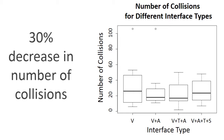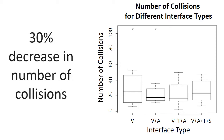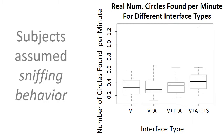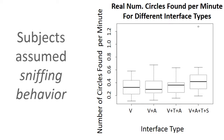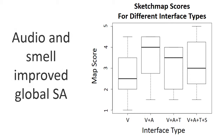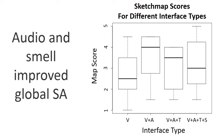Results showed a decrease in the median number of collisions with the addition of audio feedback in Interface 2, consistent with previous studies using simulated robots, though no statistically significant difference was detected, likely due to smaller population size. A statistically significant improvement in the number of circles found was detected for the interface with smell feedback compared to visual-only and visual-plus-audio interfaces. Notably, the smell feedback interface led users to adopt a sniffing behavior during the search task. Most interestingly, interfaces enhanced with audio and with audio, touch, and smell feedback led to improvements in subjects' global situational awareness, as reflected by the quality of the map sketched at the end — a potential indicator of reduced user workload.